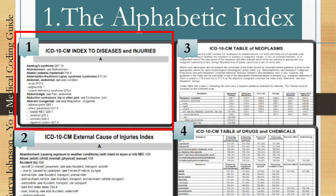The first type is the ICD-10-CM Index to Diseases and Injuries. When you search the alphabetic index, it is similar to a dictionary — arranged in alphabetical order from A to Z. For example, if the patient has a liver disease, you search under D for 'disease,' find the sub-link for 'liver,' and next to that there will be the diagnosis code. In this way you can easily find the diagnosis code from the alphabetic index.